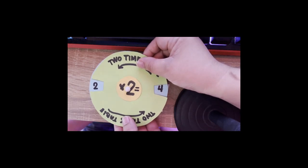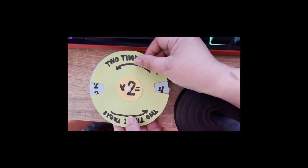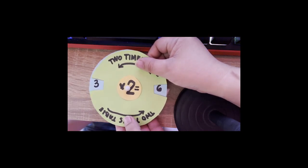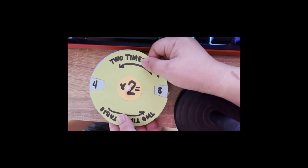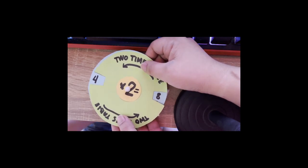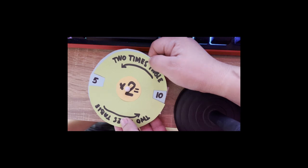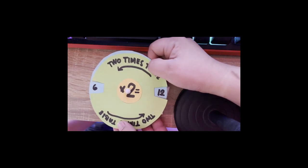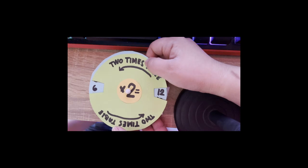2 times 2 is equal to 4. 3 times 2 is equal to 6. 4 times 2 is equal to 8. 5 times 2 is equal to 10. 6 times 2 is equal to 12.